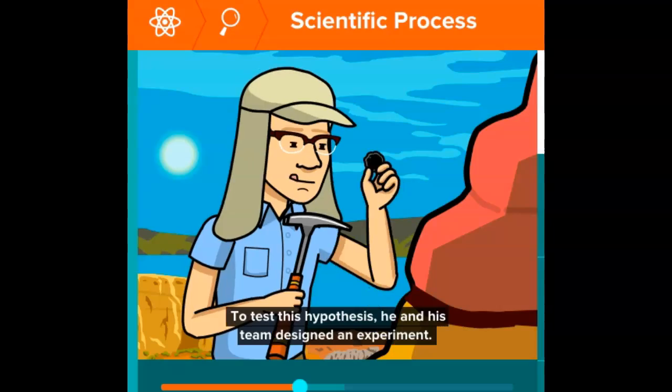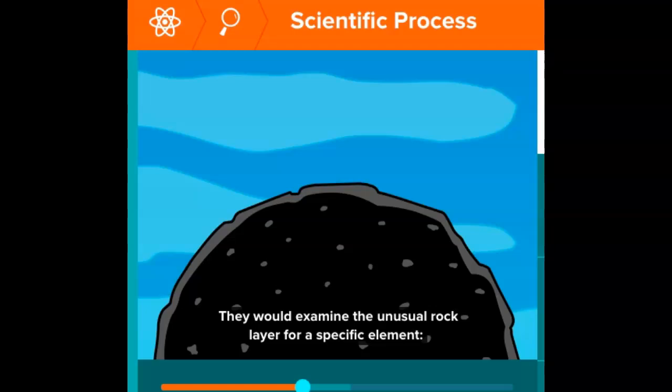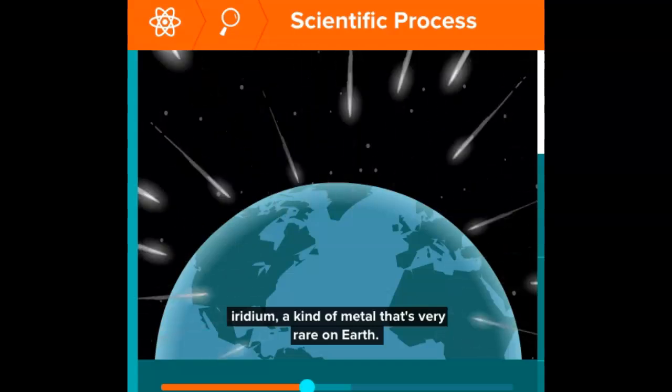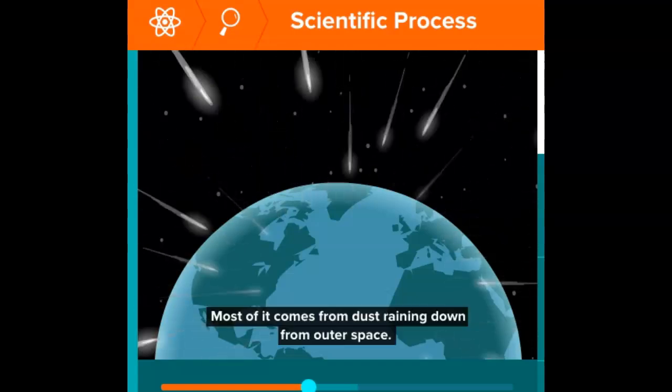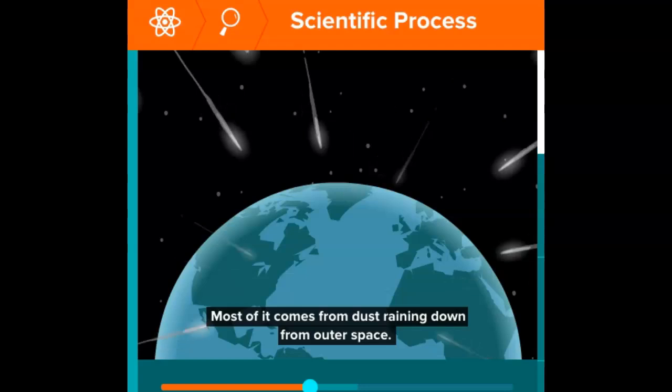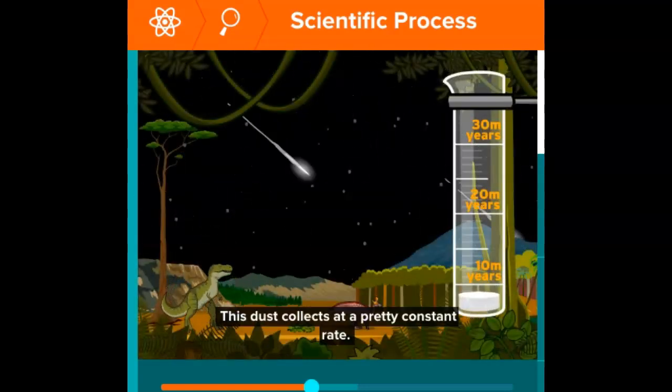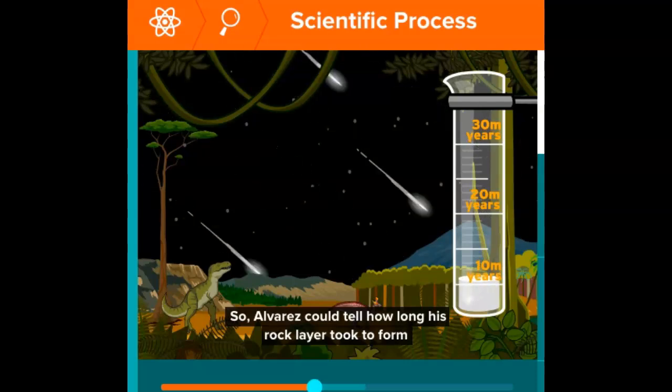To test this hypothesis, he and his team designed an experiment. They would examine the unusual rock layer for a specific element: iridium, a kind of metal that's very rare on Earth. Most of it comes from dust raining down from outer space. This dust collects at a pretty constant rate, so Alvarez could tell how long his rock layer took to form by testing how much iridium it contained.